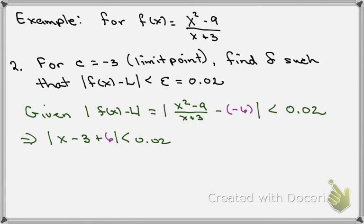So we simplify and we get that |(x-3)+6| has to be less than 0.02. Remember, we're working to try to find out what the δ is going to be for our x-axis, so we're going to continue to simplify.